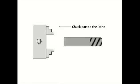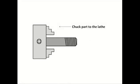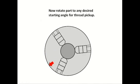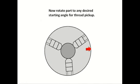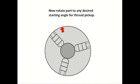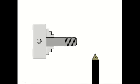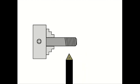Chuck the part to the lathe. Now rotate the part to any desired starting angle for thread pickup. Now engage the threading tool to the root of any existing thread.